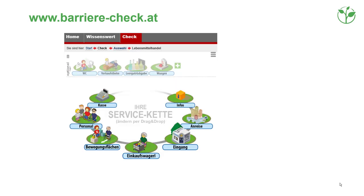The picture shows a service chain of a food retailer, including: accessible information on the website, accessible parking lots, accessible entrance, trained staff, and accessible cash desks. The user then clicks the check button and answers questions about the accessibility of each element.